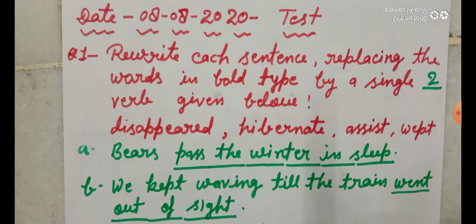So, A number, peers pass the winter in sleep. Pass the winter in sleep, you will underline these words. And after that, you will write the correct answer. B number, we kept waving till the train went out of the side.